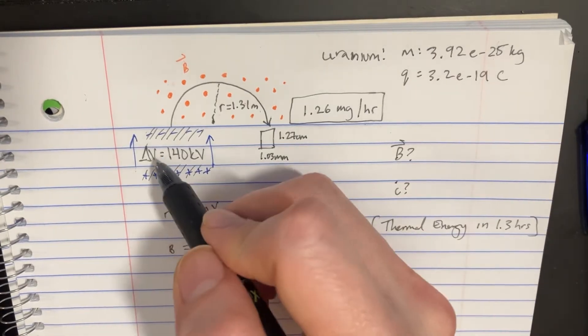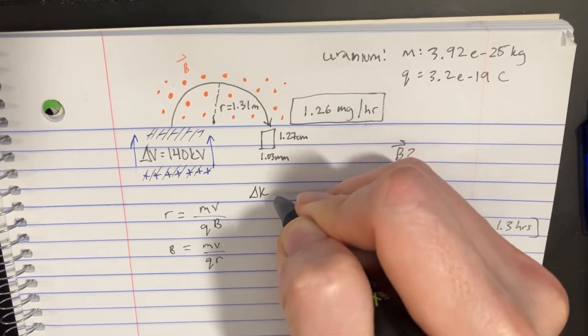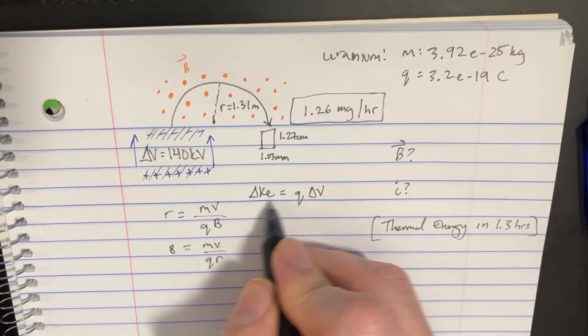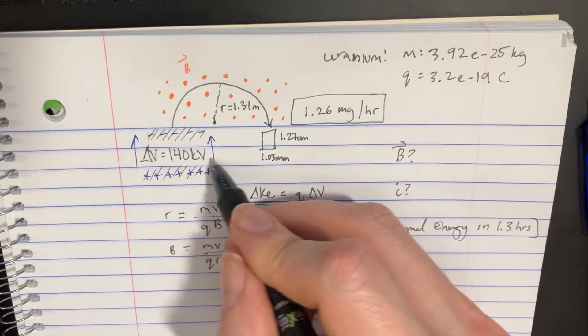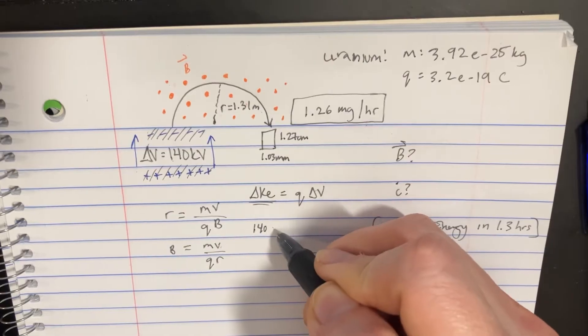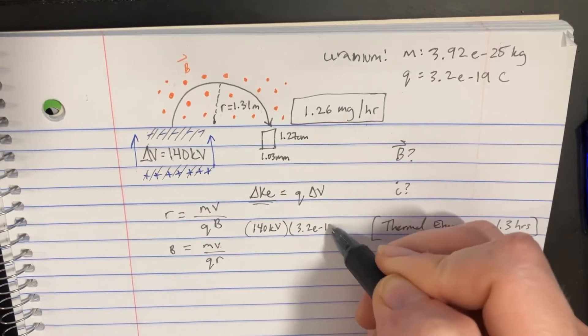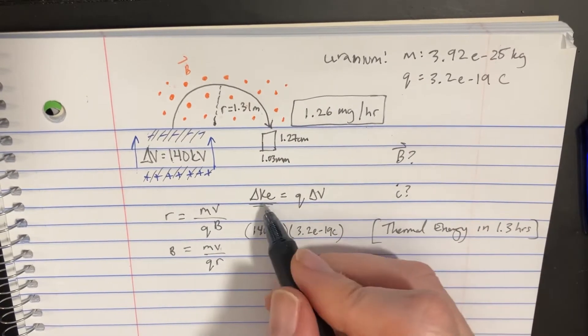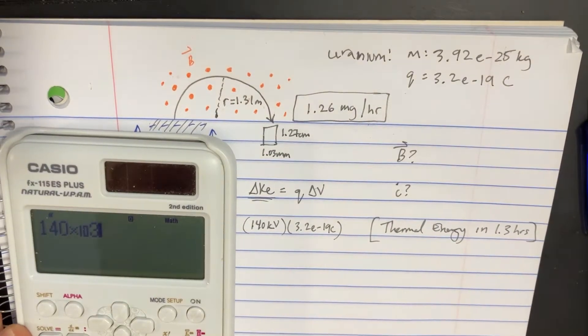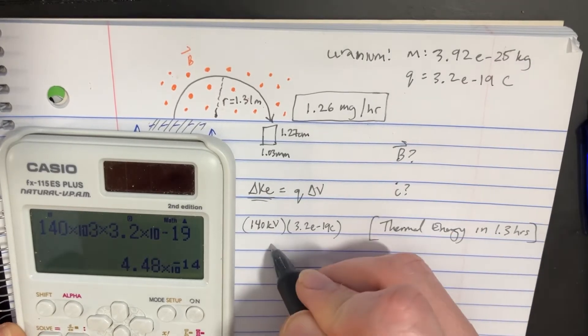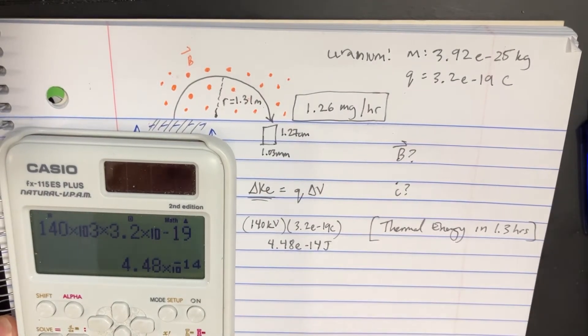To do that we need to use the potential difference here because if we have q delta v then we'll figure out what the kinetic energy change is. Let's multiply this voltage 140 kilovolts times the charge which is 3.2 e to negative 19 coulombs. That's 140 to the third times 3.2 to 19 getting 4.48 to the negative 14 joules for the kinetic energy.